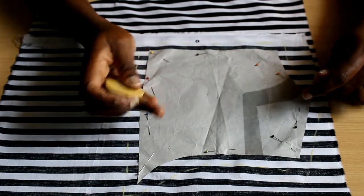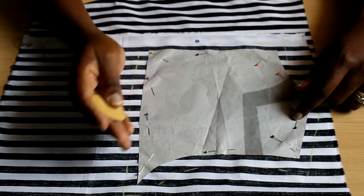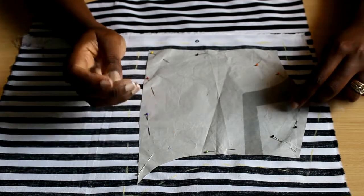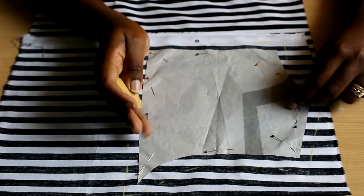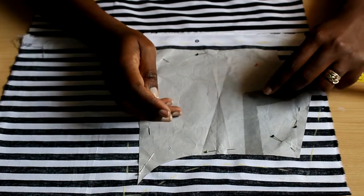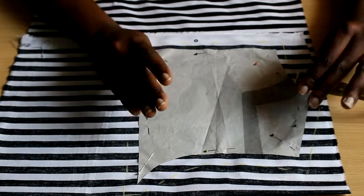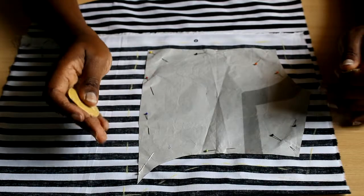Now how much seam allowance do I need? Standard is half an inch. It could be more, it could be less. Usually if it's even less than half an inch, I'll still cut at half an inch and sew because easier to sew at half an inch than trim it down. So it really depends on what I'm sewing and the type of fabric I'm working with.